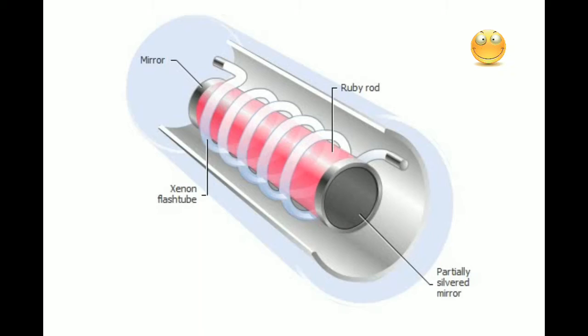This makes laser light pure in color and extremely intense. The first laser was made of a ruby rod, mirrors, and a xenon flash tube.